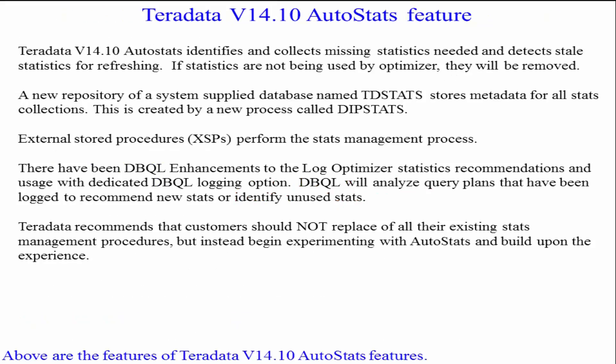Teradata V14.10 auto stats feature. Teradata V14.10 auto stats identifies and collects missing statistics needed and detects stale statistics for refreshing. If statistics are not being used by the optimizer, they will be removed. A new repository of a system supply database named TD_stats stores metadata for all stats collections. This is created by a new process called DIP stats. External stored procedures perform the stats management process.